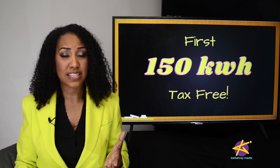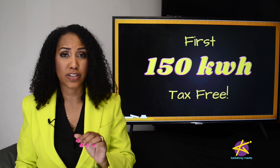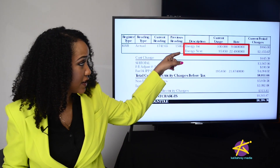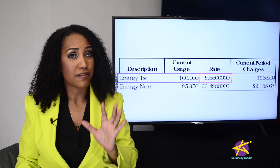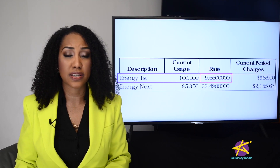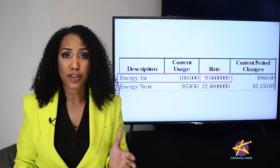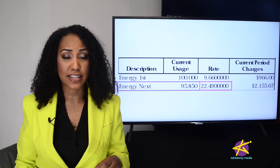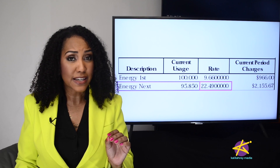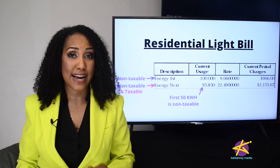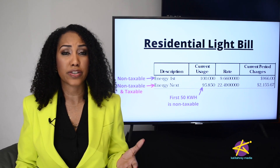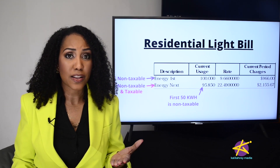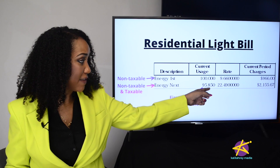Let's look at this light bill right here. This is where you see your usage — Energy First and Energy Next. Energy First is the first 100 kilowatt hours you use for the month. It's charged at a standard lower rate, and it isn't taxed. Everything else falls under Energy Next, which is charged at a higher rate. The first 50 kilowatt hours of Energy Next are also tax-free. So in total, you get 150 kilowatt hours tax-free. On this bill, you have 95.85 kilowatt hours under Energy Next.